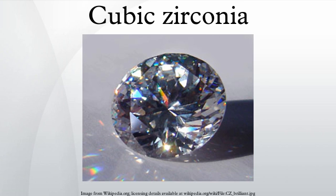It is a dense substance, with a specific gravity between 5.6 and 6.0 — at least 1.6 times that of diamond. Cubic zirconia is relatively hard, 8 to 8.5 on the Mohs scale — slightly harder than most semi-precious natural gems. Its refractive index is high at 2.15 to 2.18 and its luster is adamantine. Its dispersion is very high at 0.058 to 0.066, exceeding that of diamond.